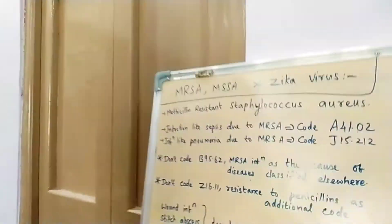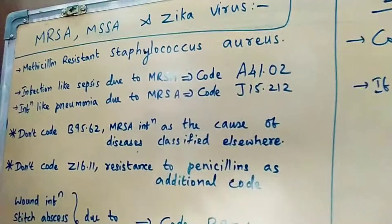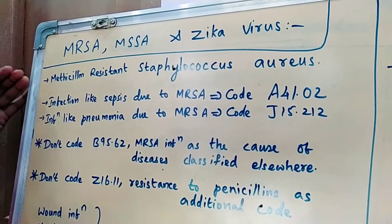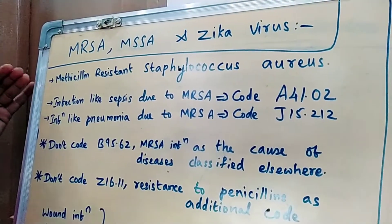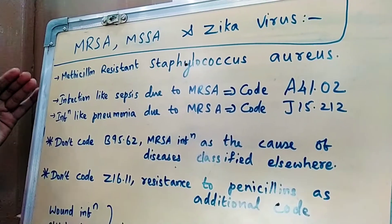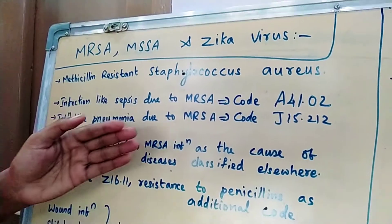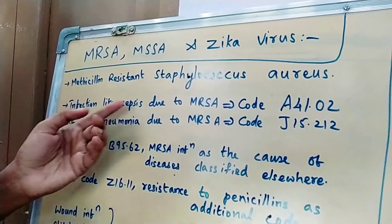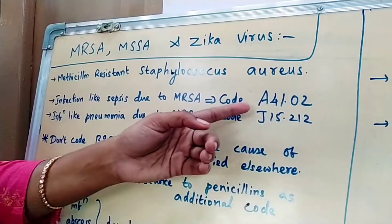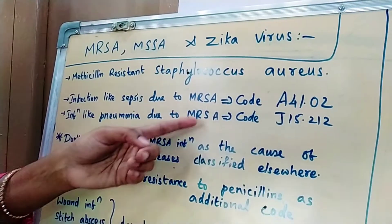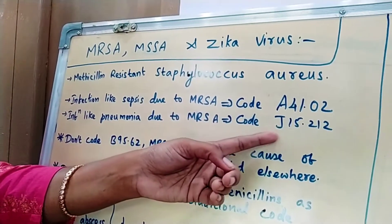Hello friends, welcome to Coding Monitor channel. Today I'll be telling you about MRSA and MSSA coding guidelines along with Zika virus. MRSA means methicillin-resistant Staphylococcus aureus. If infections like sepsis or pneumonia are due to MRSA, we have combination codes: sepsis due to MRSA is coded A41.02, and pneumonia due to MRSA is coded J15.212.